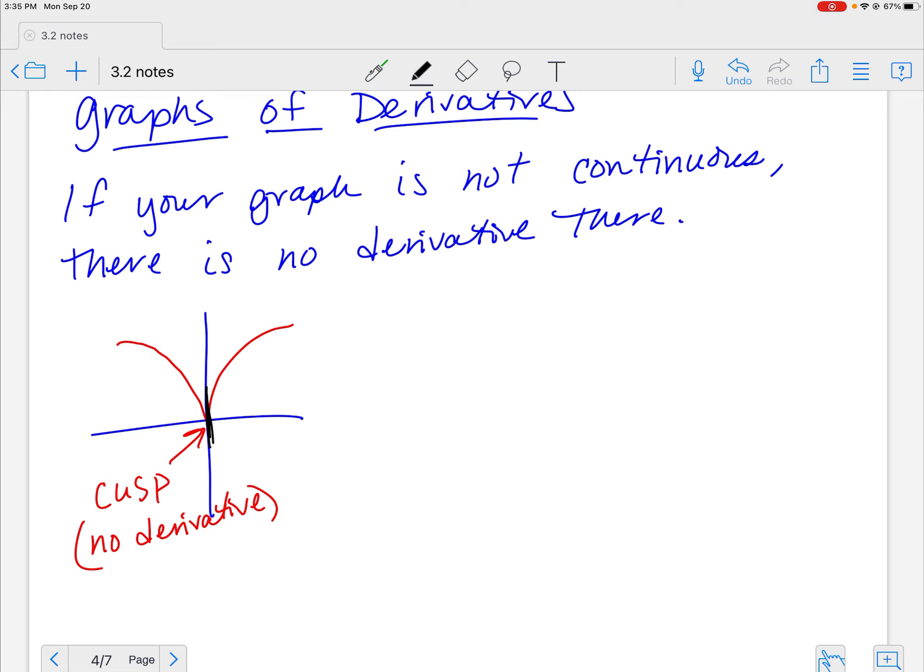Check out how those algebra skills are paying off. So I can't have a derivative at a cusp. So if it comes to a point like that, that's called a cusp, and you automatically know there's no derivative there.